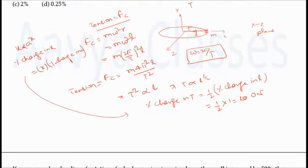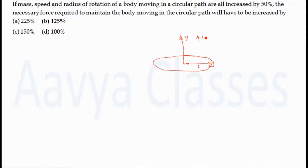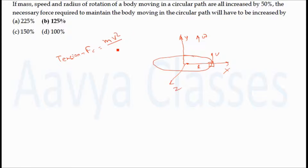We will see the next problem. This problem says that if mass, speed, and radius of rotation of a body moving in a circular path all increased by 50%, then the necessary force required to maintain the body moving in the circular path will be increased by how much. Basically, a body of mass M is attached to a string of length L and rotated in a circular path with angular speed ω and linear velocity V. We calculate the centripetal force as Fc = M·V²/L.